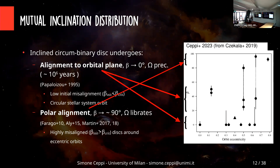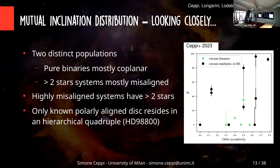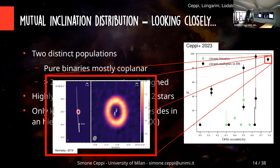Looking closely at this plot, I marked in green disks orbiting a pure binary system with no additional companions, and in black disks orbiting systems with more than two stars — having additional companions inside the cavity or outside the disk. We see two distinct populations: the pure binary population (green points) is mostly coplanar, while systems with more than two stars are mostly misaligned. Highly misaligned systems only appear around systems with more than two stars. The only disk we know for sure is in a polar configuration — discussed in this workshop — is HD98800, a disk orbiting the inner binary of a hierarchical quadruple. So we wondered how polar alignment works in a system with more than two stars.